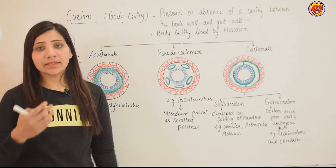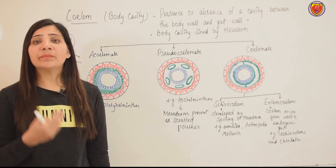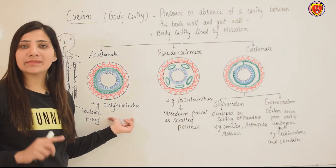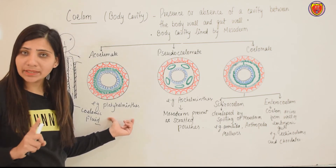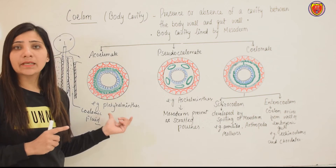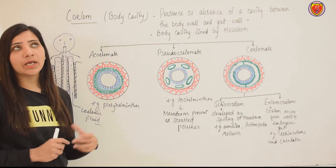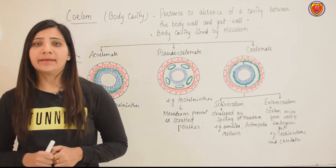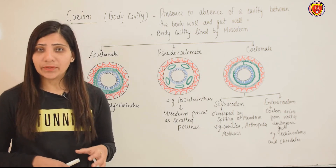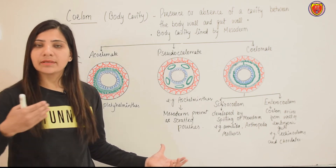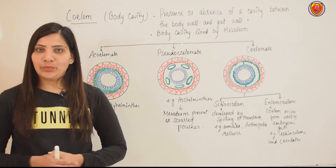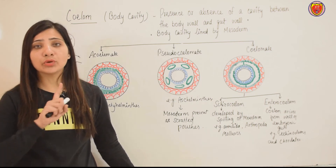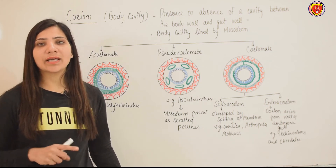There are some animals that have 3 germ layers present but don't have a body cavity. This is the Platyhelminthes category — for example, tapeworm (Taenia solium), and liver fluke. These animals have 3 germ layers present, but mesoderm did not divide to form a coelom. There is no body cavity. This type of animal is called acoelomate.